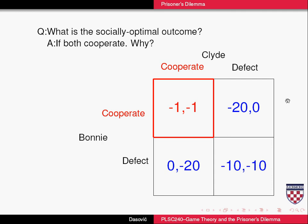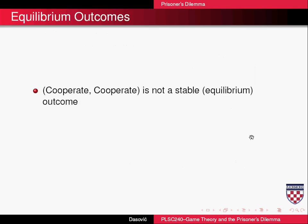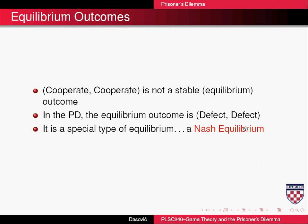This is socially suboptimal, and going back to the video clip, this is what Adam Smith argued would be the outcome of individuals acting competitively — that society would be better off. But what game theorists found out was that individuals acting on the basis of their own self-interest would end up in a prisoner's dilemma, always landing in defect-defect. Cooperate-cooperate is not a stable or equilibrium outcome. In the prisoner's dilemma, the equilibrium outcome is defect-defect, and it's a special type — it's a Nash equilibrium.